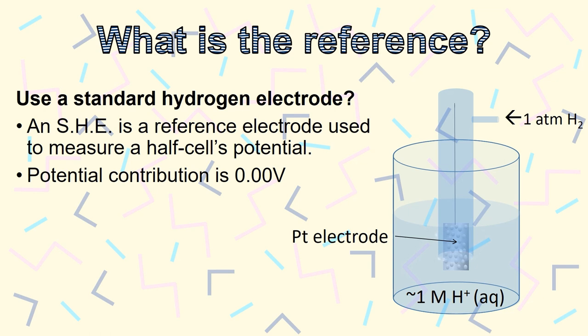Looking closer, we see that this isn't a very convenient half-cell. It uses concentrated acid, requires a constant supply of hydrogen, and uses an expensive platinum plate where the half-reactions occur.